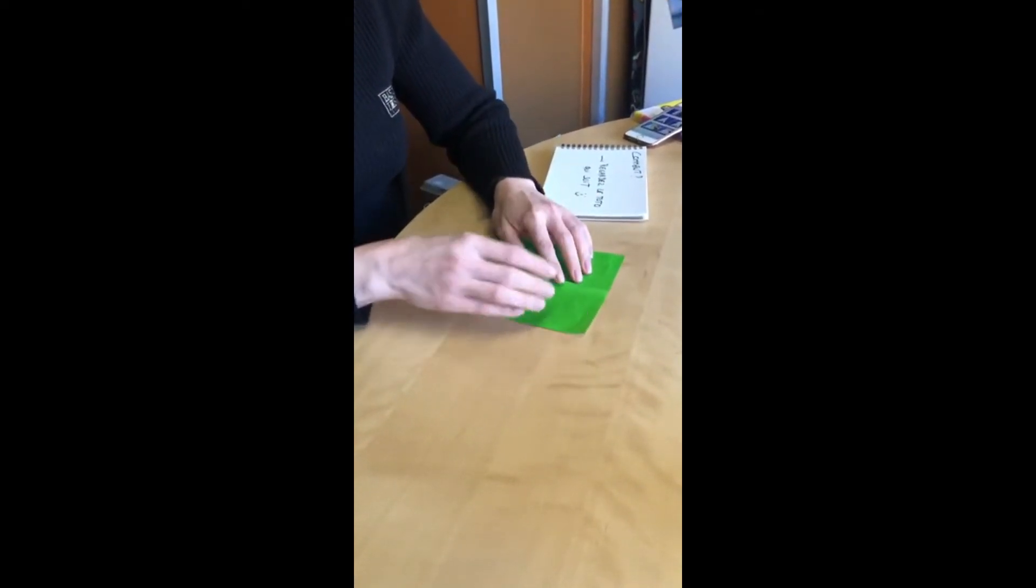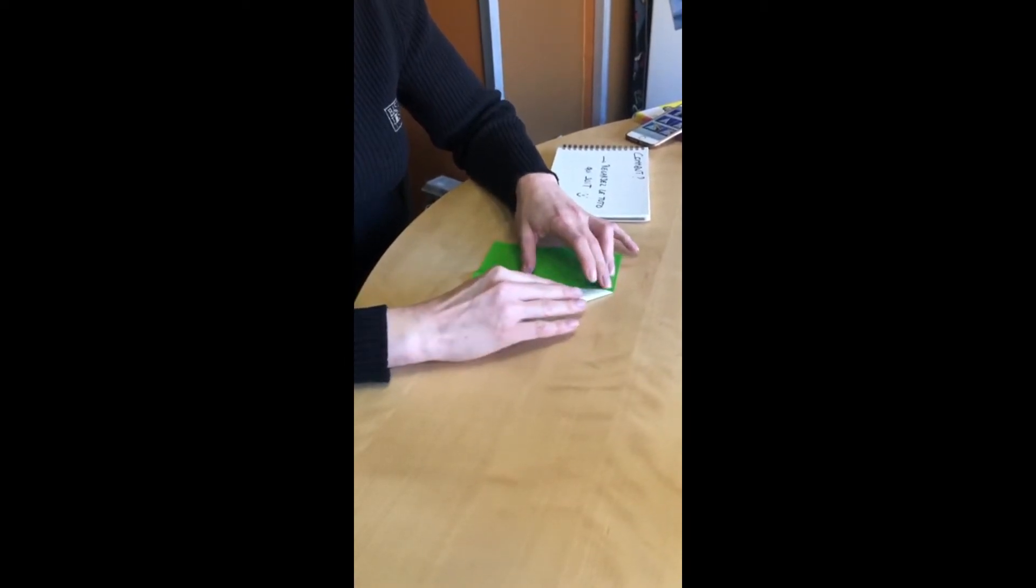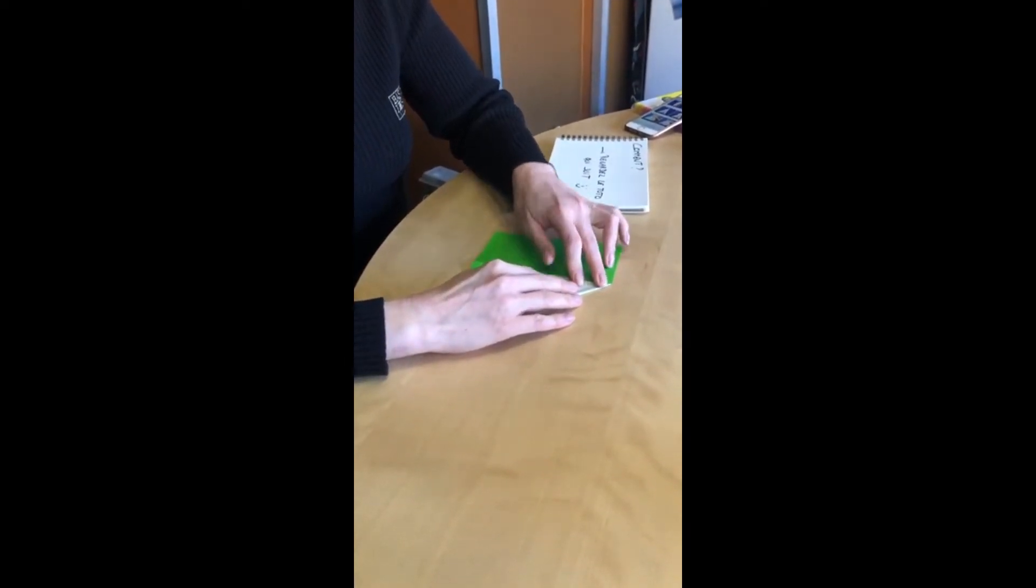On déplie, face colorée vers le haut, et on vient remettre les coins supérieurs sur le pli central.